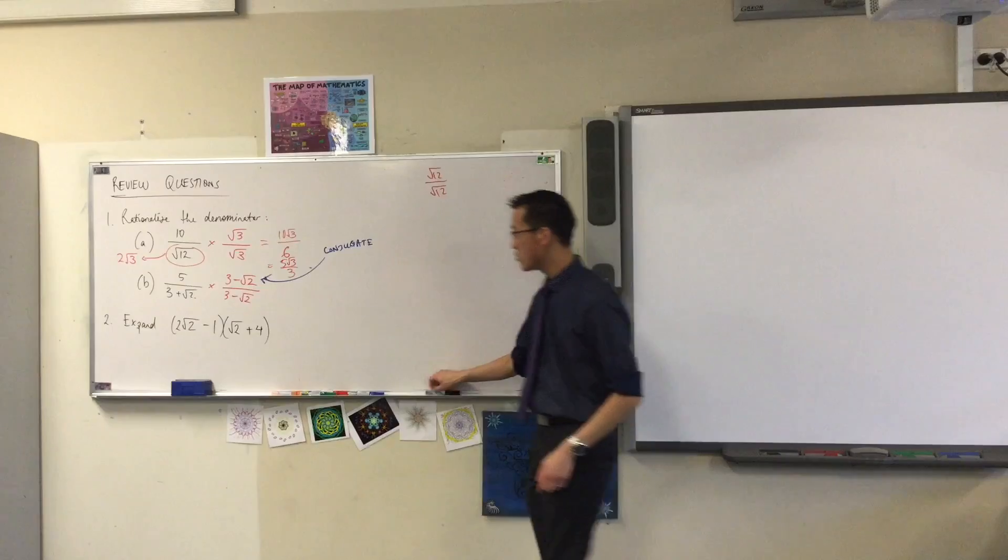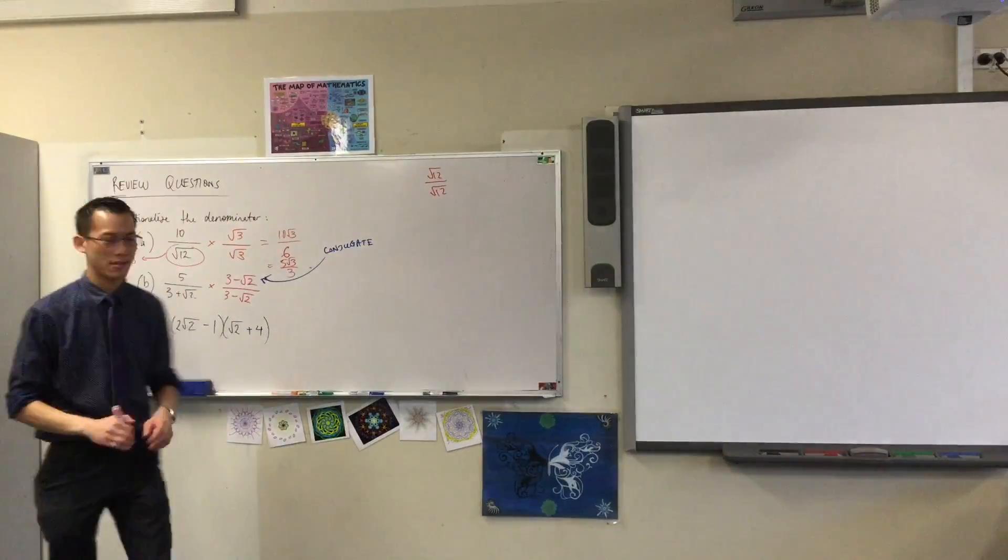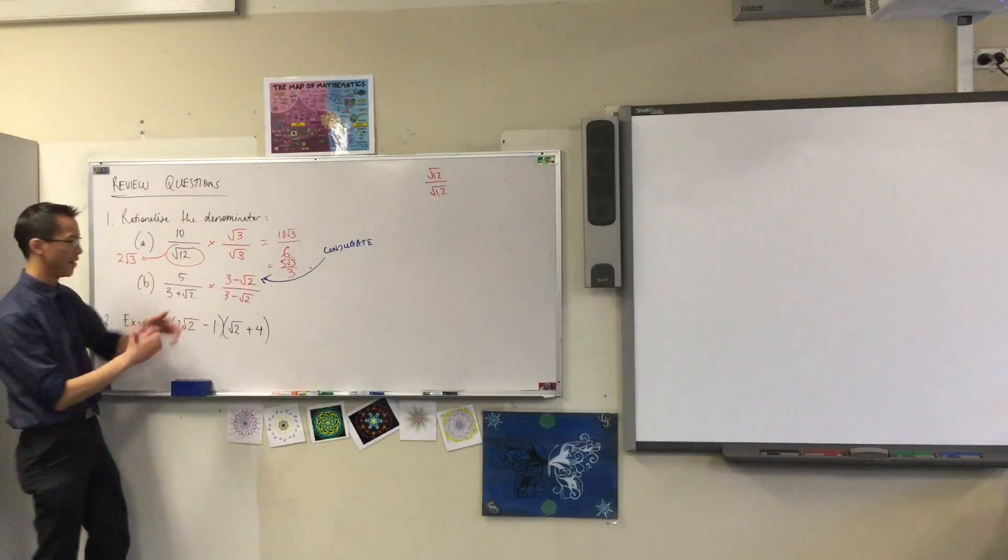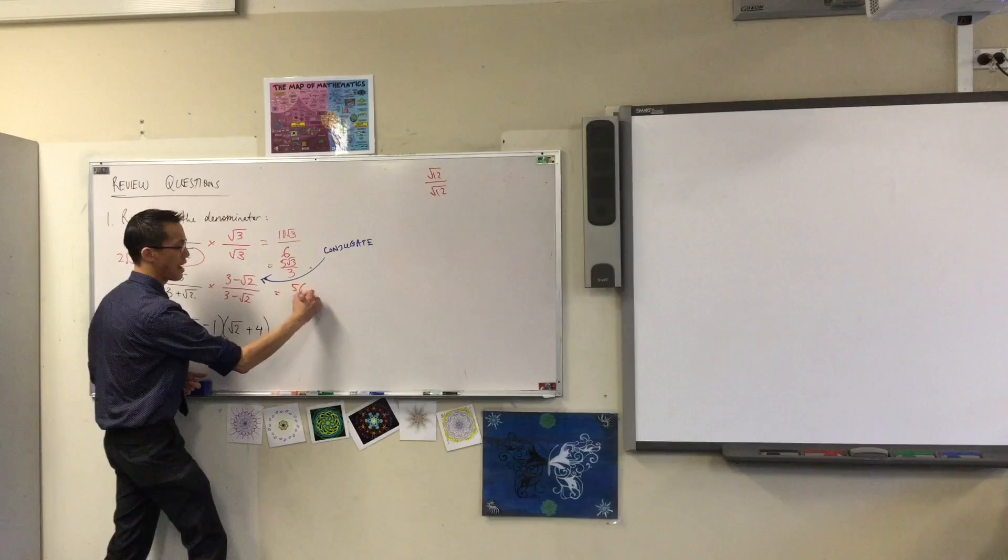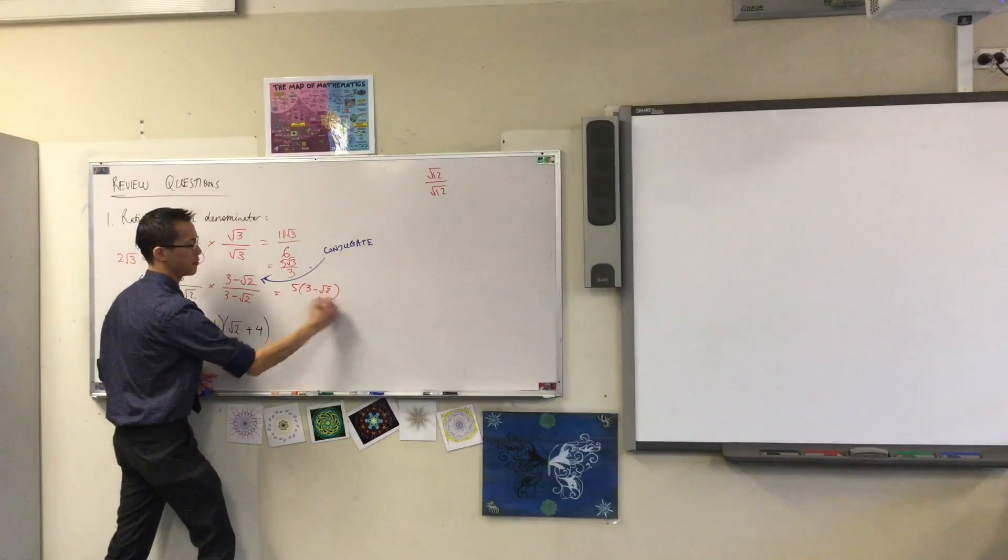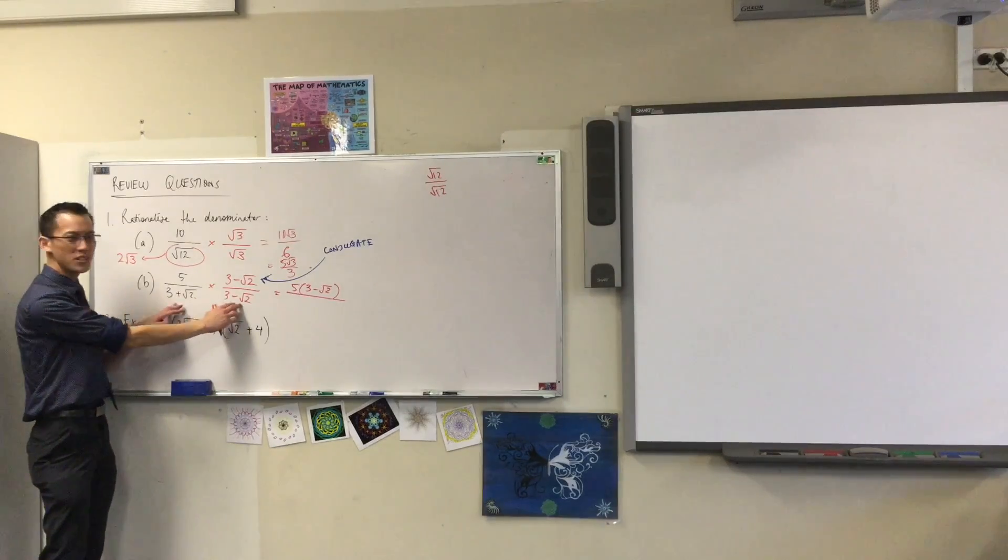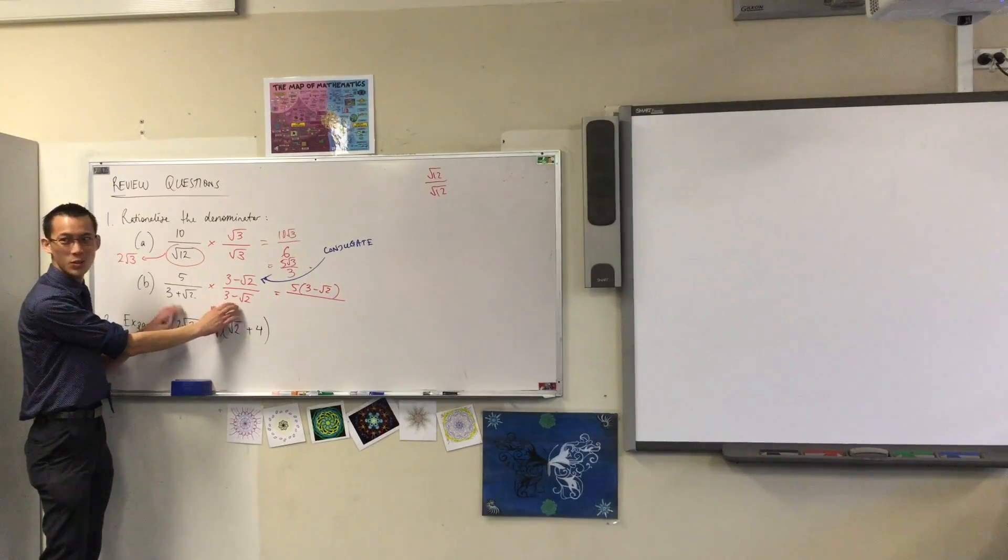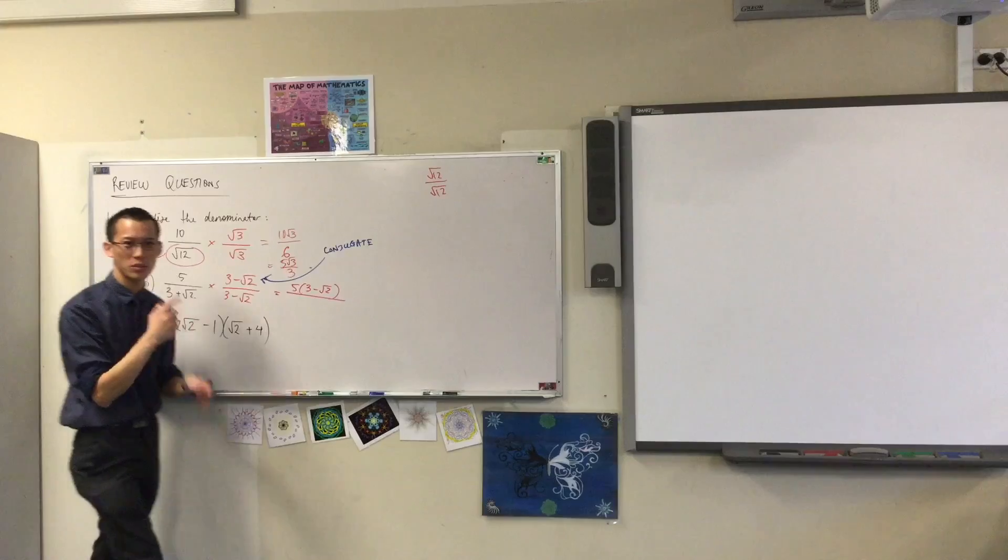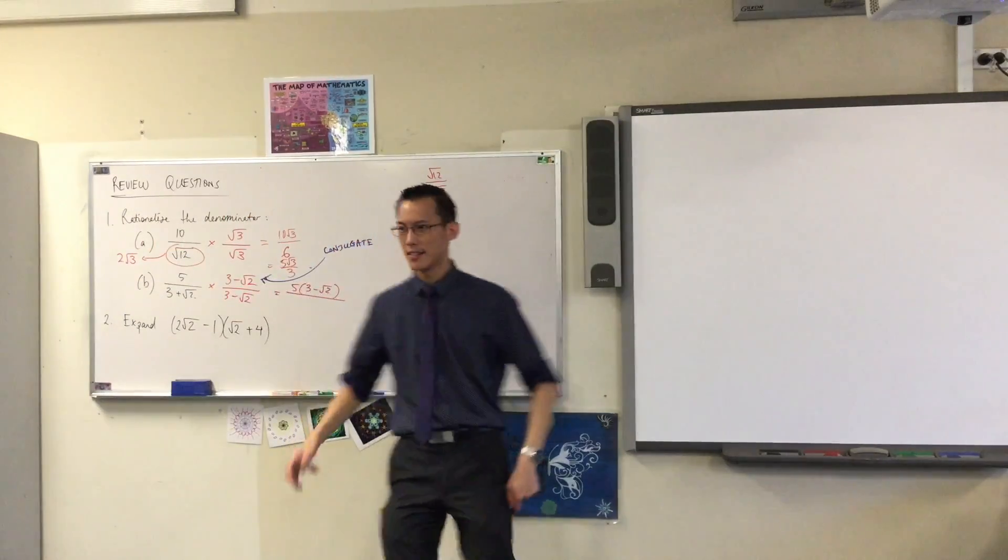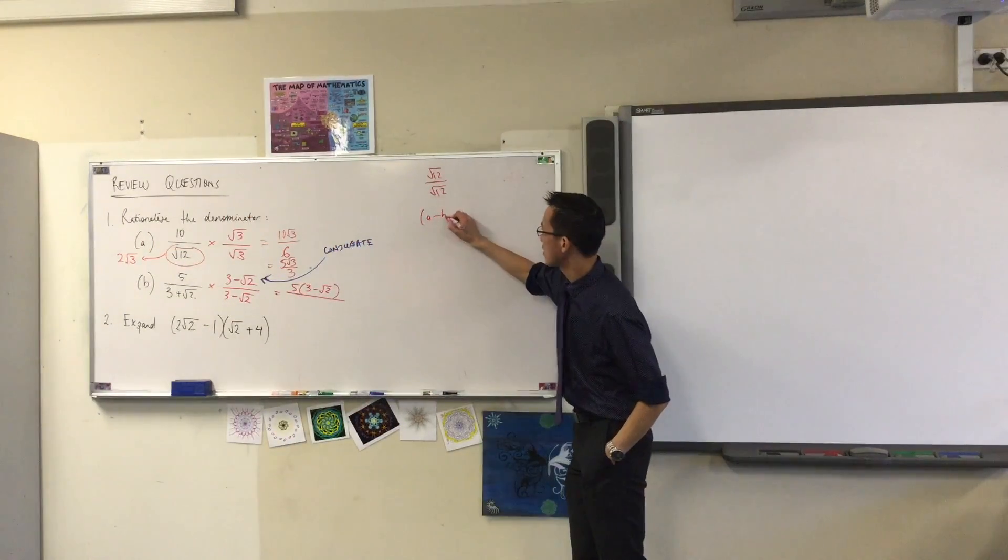What happens when you do that? When you multiply the top across, right? This is going to be 5 times that. What happens to the bottom? Do you remember? What's useful about these things? What's useful about these things? The plus and the minus. What do they remind you of? Do you remember this? Yeah, I think I heard it.